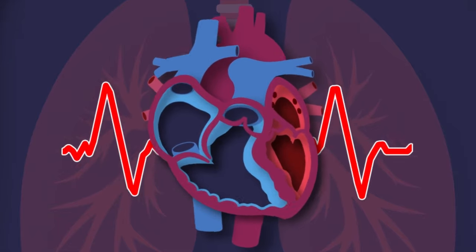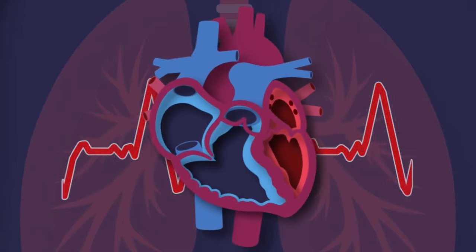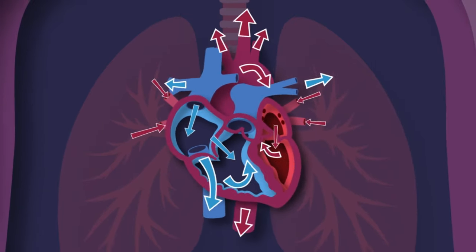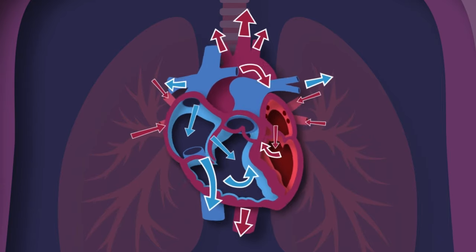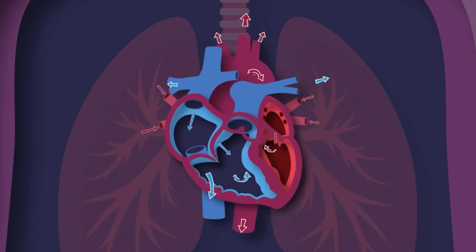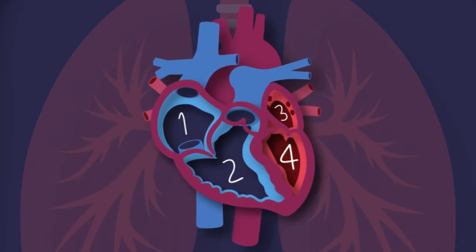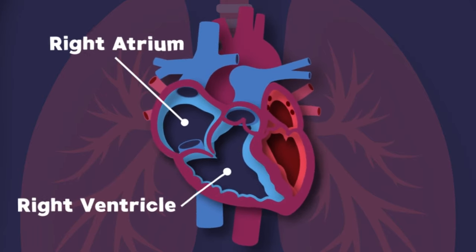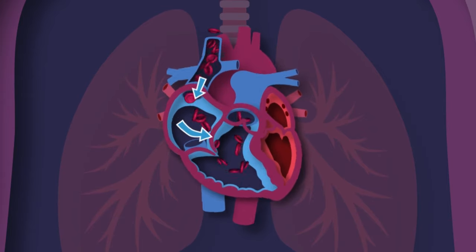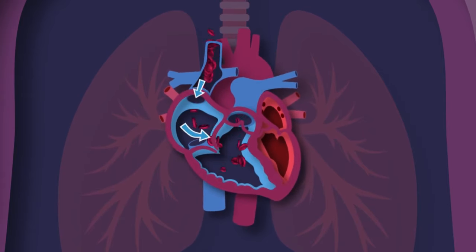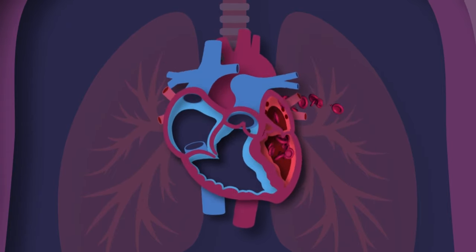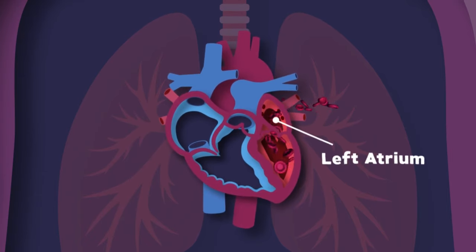I'm your heart. I live inside of your chest; I'm about the size of your fist and I never take a rest. I'm your heart — you couldn't live without me. I pump the blood that fuels your body, so take care of me please. The human heart is made up of four major chambers. The right atrium and right ventricle are the first two. They receive blood that's low in oxygen from your whole body and send it to your lungs through your pulmonary artery.